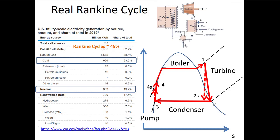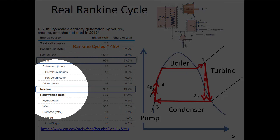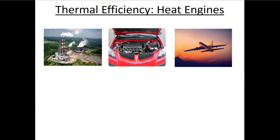We often classify power plants based on how we get the heat — by burning coal or performing a nuclear reaction, which is exothermic and creates heat to boil water. A Rankine cycle is a heat engine. The word thermodynamics literally means taking heat and turning it into power. There are different kinds of heat engines we'll talk about in this class, but the first one is the Rankine cycle.